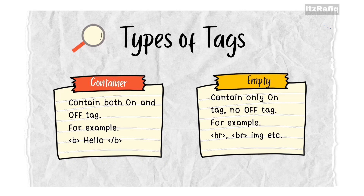We get mainly two types of tags: container and empty. Container tags contain both an opening and a closing tag. Empty tags have no end tag. There are many empty tags in HTML but the number of empty tags is less than container tags — for example, hr, br, img, etc. We will learn more later on.